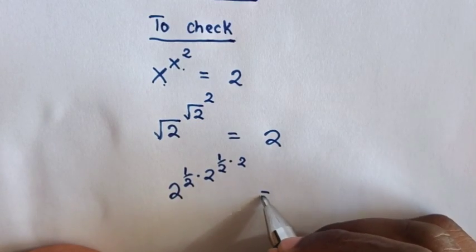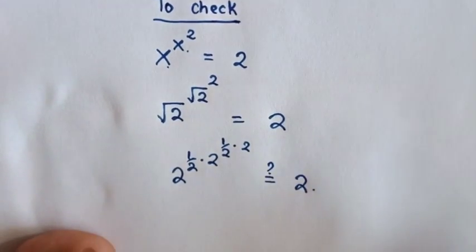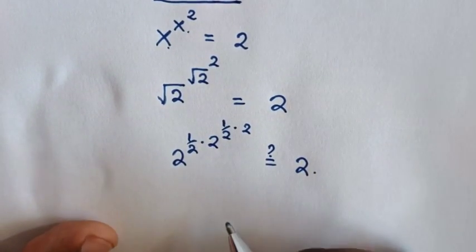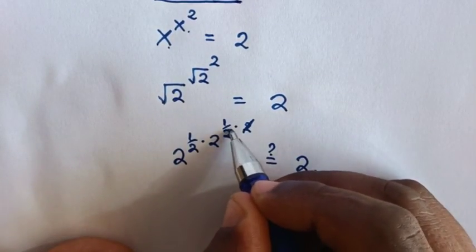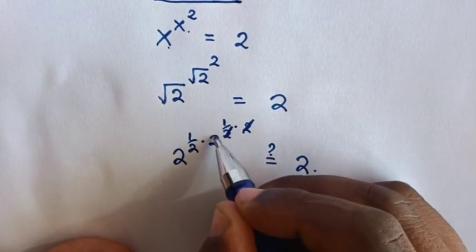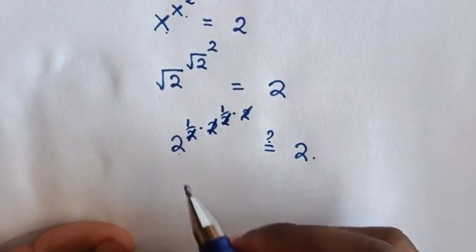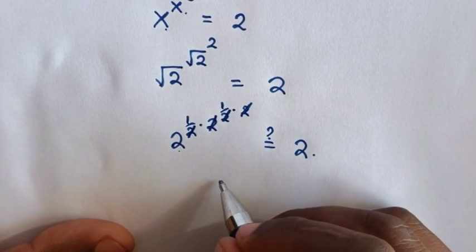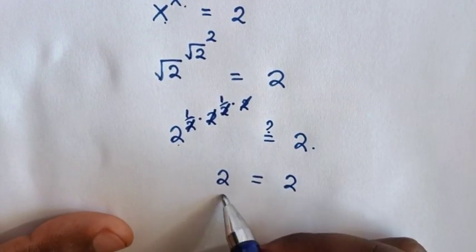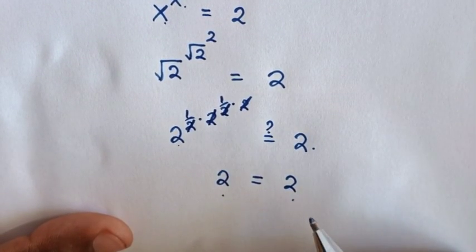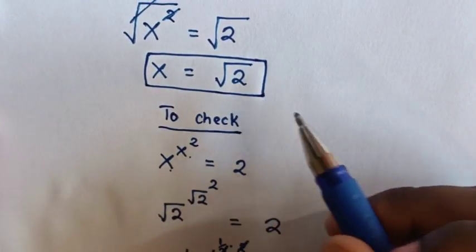So this will be equal to 2. To simplify from top to bottom, this 2 will cancel with this, and this will cancel with this. So here it will be 2 is equal to 2. As the left side and right side are equal, it is true for the value of x.